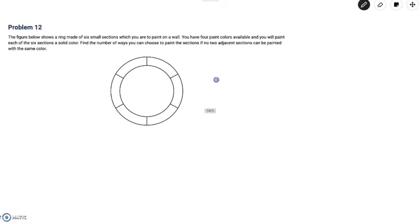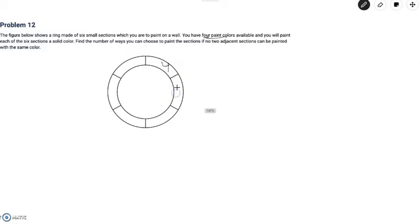At first glance this problem doesn't look very intimidating for a number 12 because we only have four colors available and we only have to paint six sections. Someone might say that you have four choices for the first one and then three for the second, three for the third, three for the fourth, three for the fifth, and three for the sixth. And they would multiply this to get four times three to the fifth.